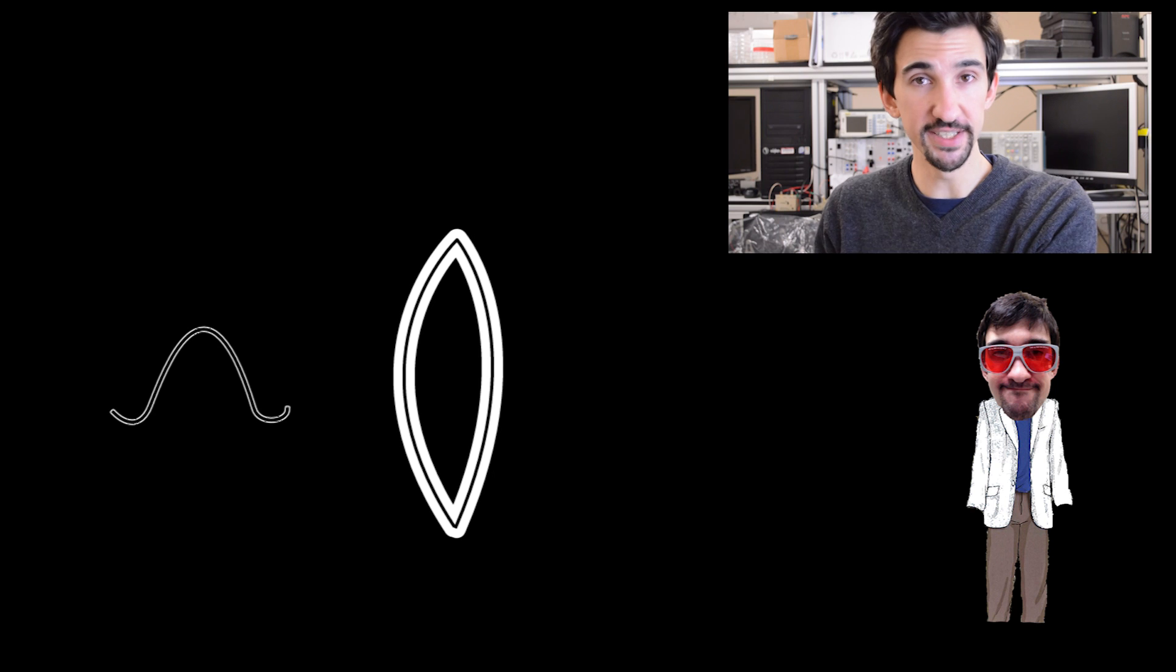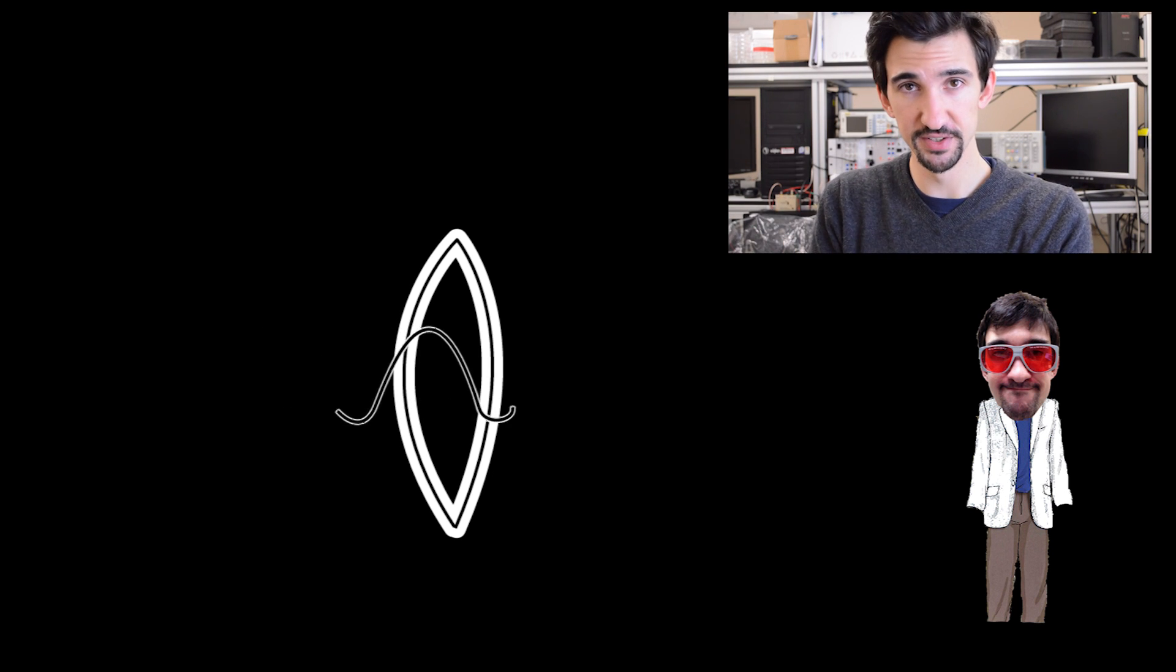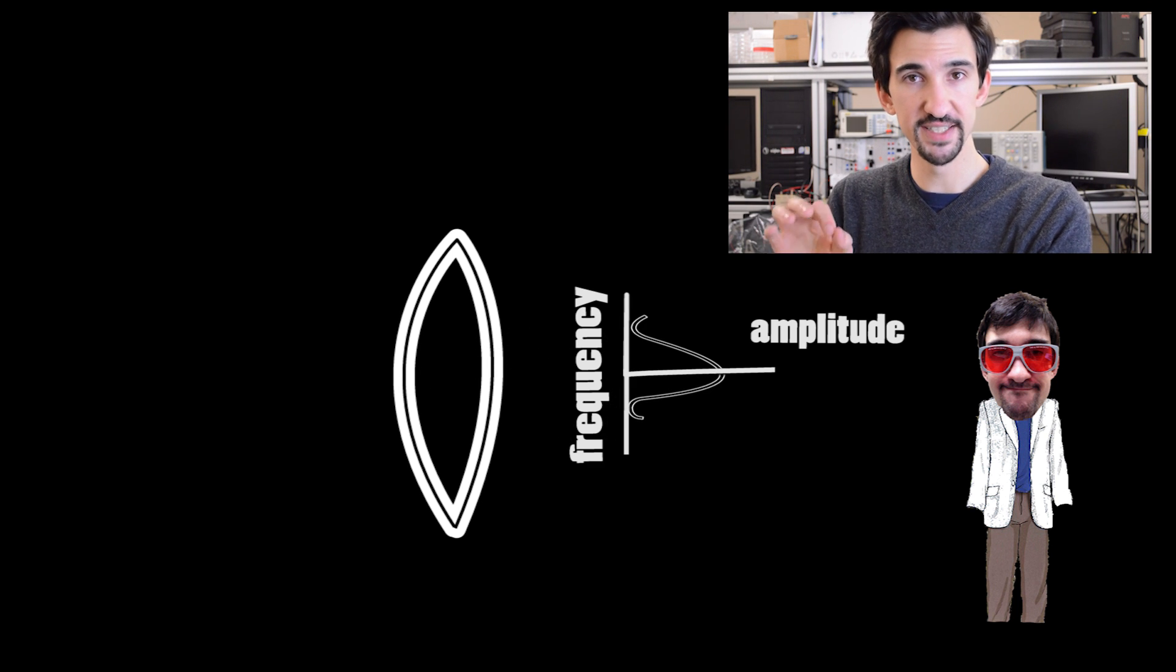So today what we're going to do is an experiment. And there's actually one last piece of information you need to know. You need to understand that as we pass light through a lens, what that lens is actually doing at the focus is taking the Fourier transform of the light's intensity profile.